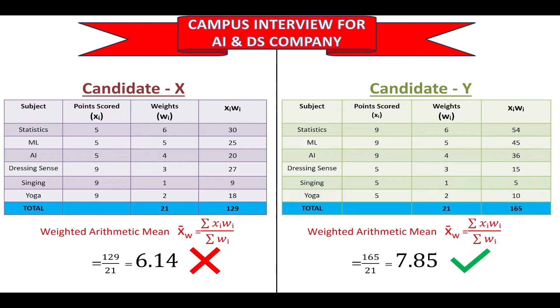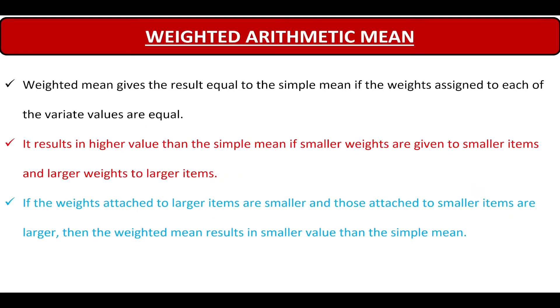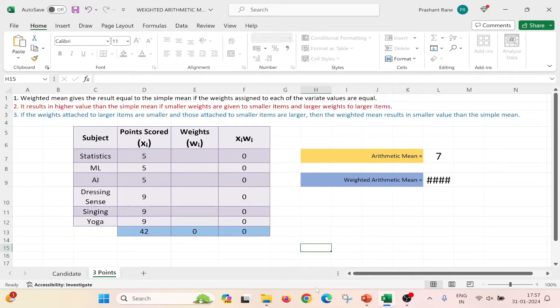I hope the concept is clear. Now let us study 3 important aspects of Weighted Arithmetic Mean. For easy understanding, I will show all these aspects on an Excel sheet. Now this is the Excel sheet. I have written all the 3 aspects and we will get the Weighted Arithmetic Mean and compare that with the Arithmetic Mean. So now let us see the first aspect.